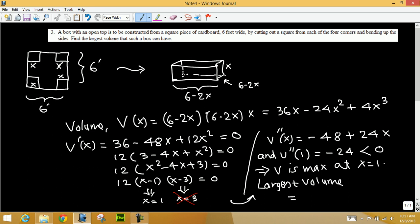Largest volume is length times width times height. So with X equals one, we are going to get the largest volume. So the length is now six minus two times one, so this will be four, four, and one. So four times four times one is sixteen. And that's feet, cubic feet. Thank you.